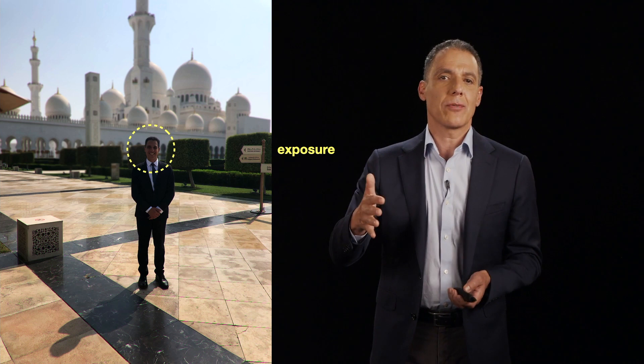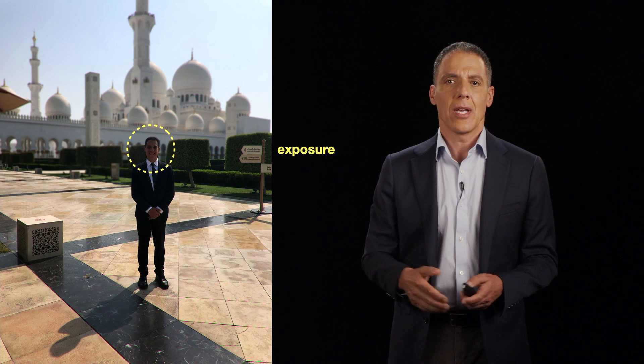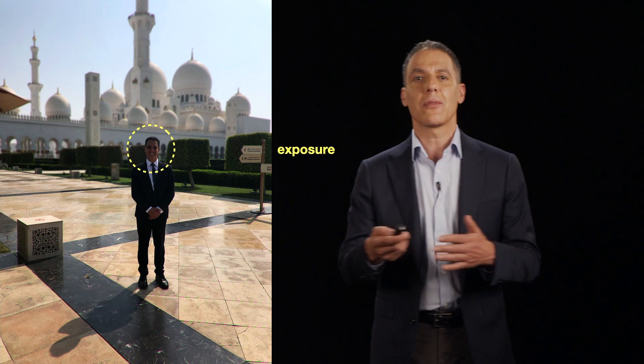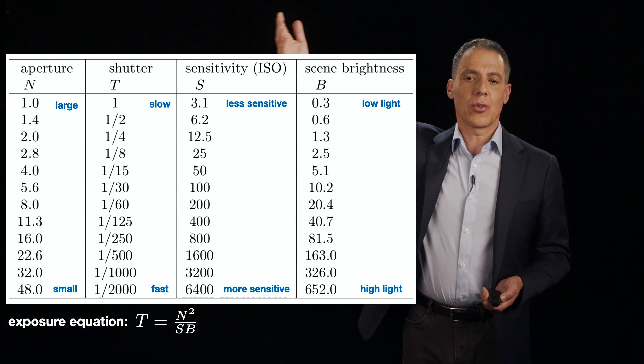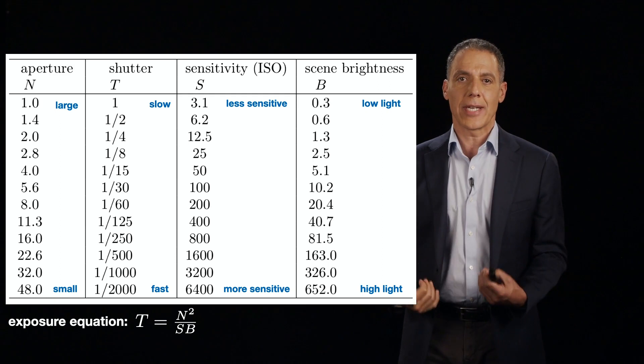So remember the first thing we talked about was exposure. How does the camera know how to expose a photo? When you take a photo of me, you want me to be well exposed, not too dark, not too bright. And the way the camera does that is it balances a number of things, some of which we've seen and some of which we are about to introduce. There are four basic things that you are controlling in an imaging system. One of them you have very little control over, which is just the scene brightness — how much light is in the room.